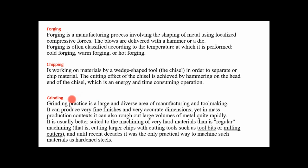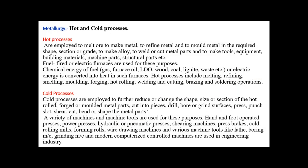Grinding is a large and diverse area of manufacturing and tool making, involved in most industries. It can produce very fine finishes and accurate dimensions, and in mass production can also rough out large volumes of metal rapidly. It is usually better suited to the machining of very hard materials than regular machining. These are the different operations involved under automobile manufacturing and metal activity.